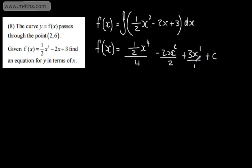Don't forget your constant of integration as we're going to need it now to get our f of x written out with this value, this constant. And that's why we've got these points here. So f of x is going to be equal to 1 over 8 x to the power of 4 minus x squared plus 3x plus c.